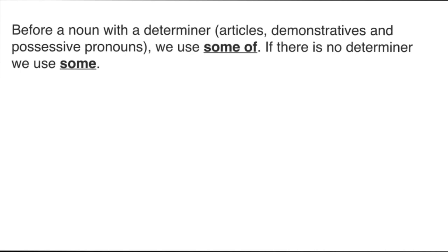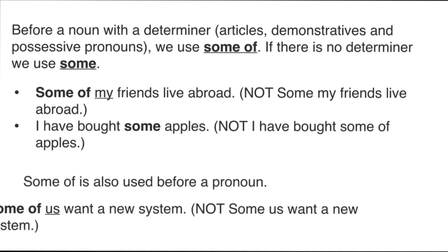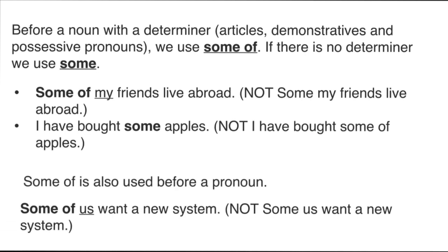Before a noun with a determiner — articles, demonstratives, or possessive pronouns — we use 'some of'. If there is no determiner, we use just 'some'. For example, 'Some of my friends live abroad' (not 'some my friends'), and 'I have brought some apples' (not 'some of apples'). 'Some of' is also used before a pronoun — for example, 'Some of us want a new system.'